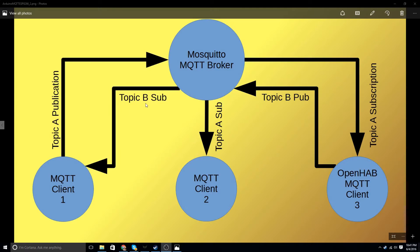I'm just showing A and B here, but the topic could be something like doorbell, light switch, light zone, washing machine, fan status — whatever you are working with in your control system. Messages are also strings and could be anything. So a doorbell might be push and release, a washing machine might be on and off, and a fan might be on, off, belt break — those sorts of messages.